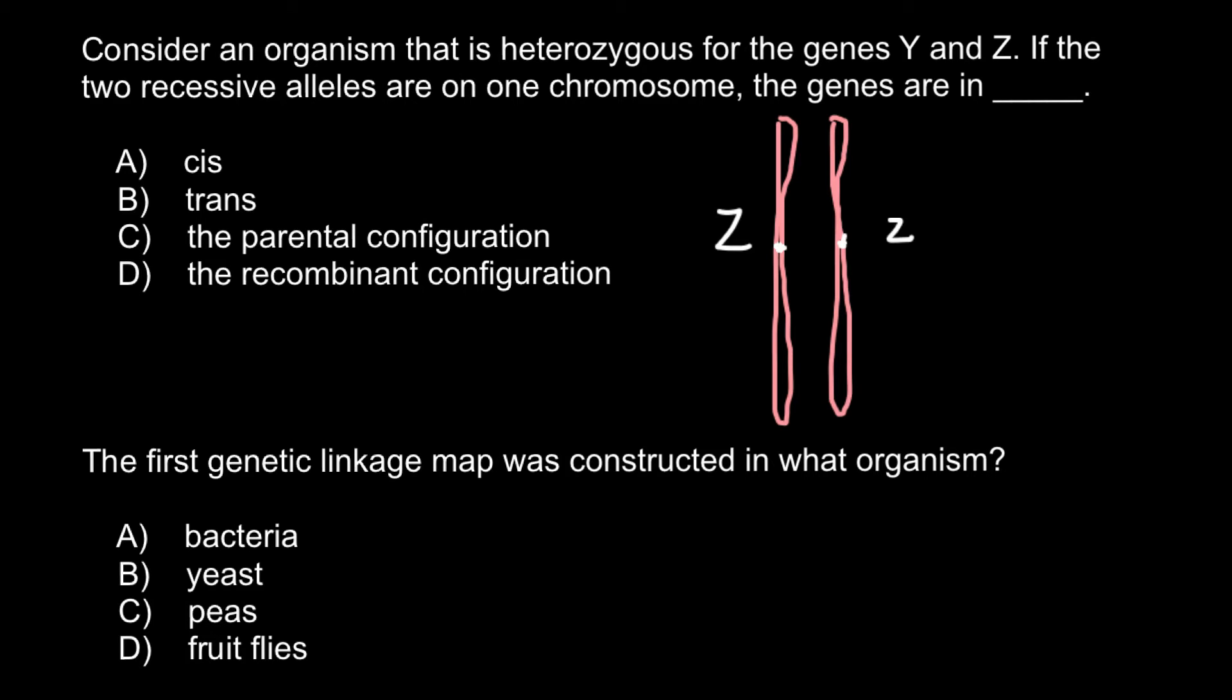If the two recessive alleles are on the same chromosome, on one chromosome, that means here we have to have small y allele, and here we would have capital Y allele. As you see, two recessive alleles are on the same chromosome, and that means two dominant alleles are also on the same chromosome.